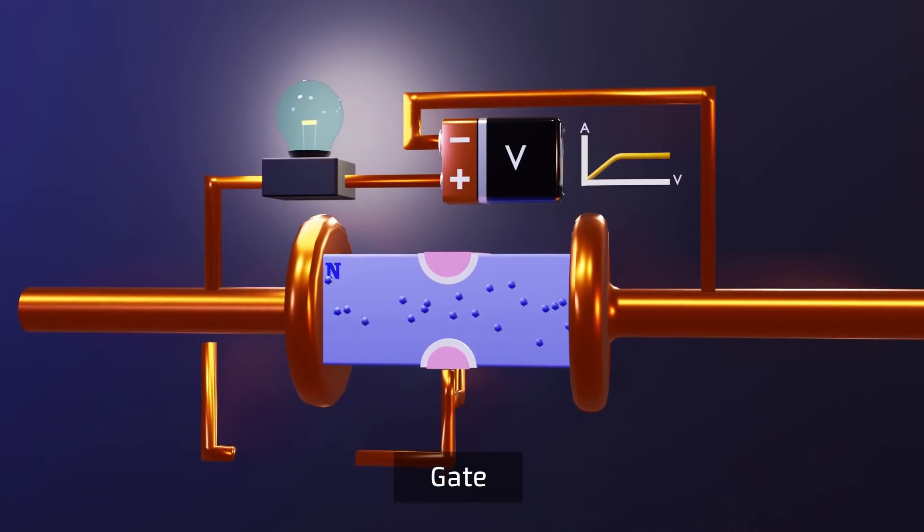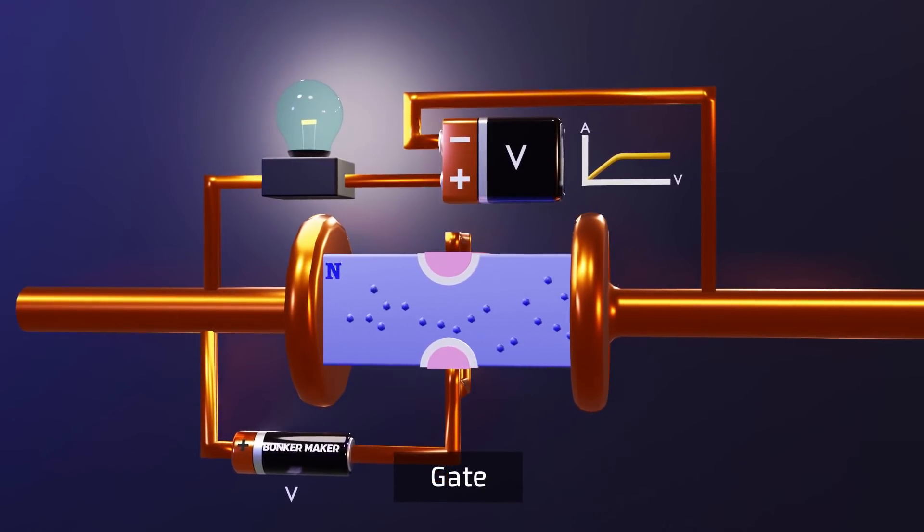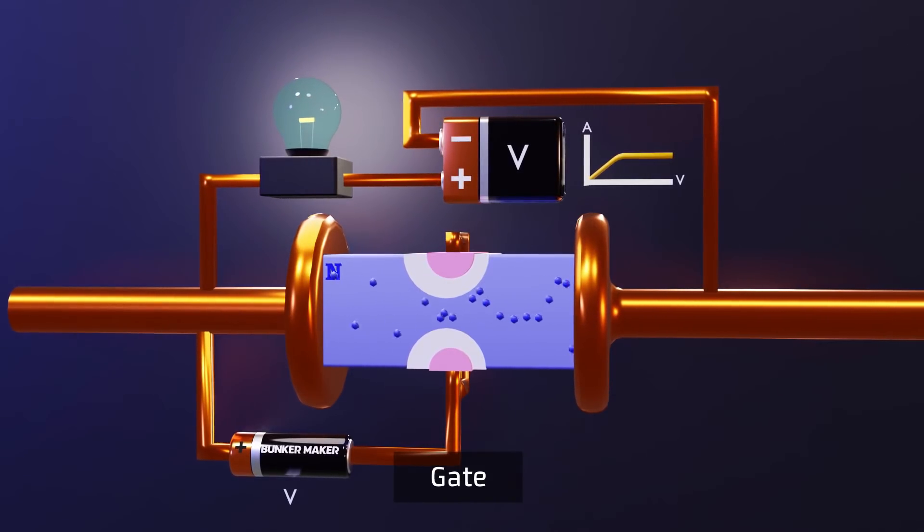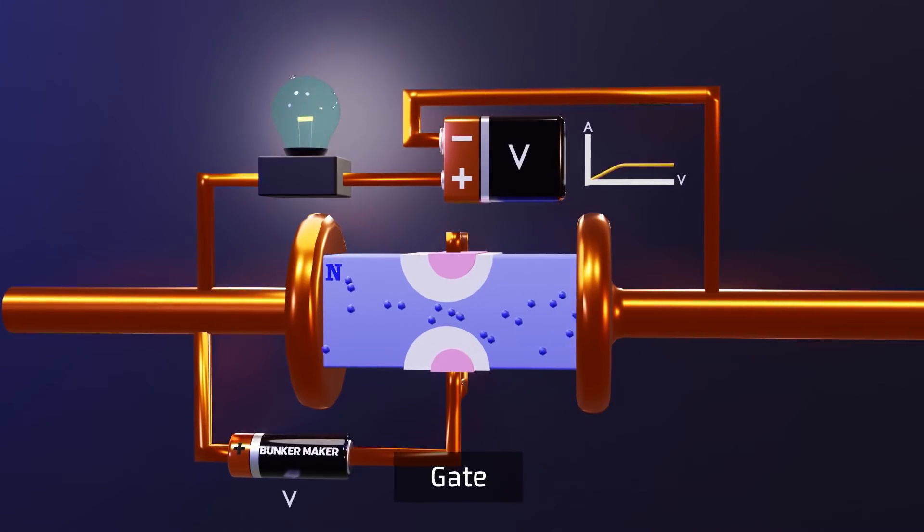In the JFET the gate is used to further increase the depletion zone and therefore generate a strangulation of the current flow, modifying the curve of current versus voltage gradually until it completely closes the passage of electrons.